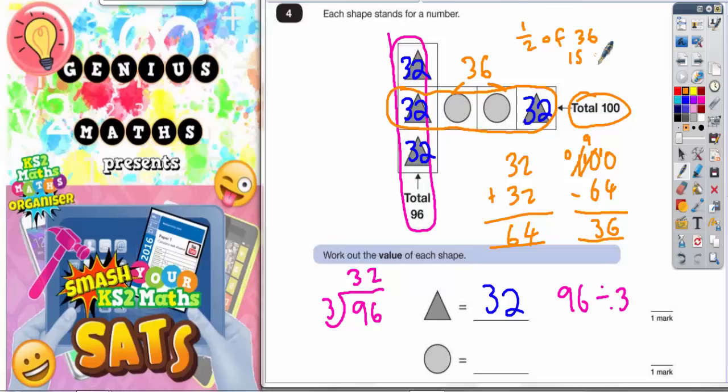So if the two circles together are 36, if you do half of 36, you'll figure out what one circle is. Well, half of 30 is 15, and half of 6 is 3.